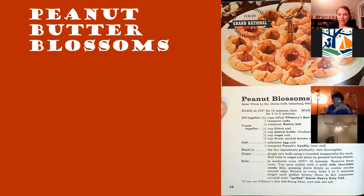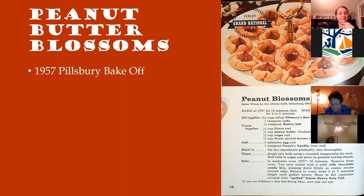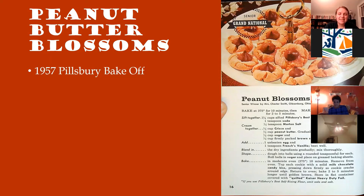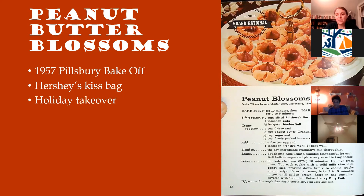The peanut butter blossom — as I said, very distinctly American. It was entered into the 1957 Pillsbury Bake-Off contest. The Bake-Off baking contest had been around since 1949, post-war, end of sugar rationing in 1947. It was to promote Pillsbury flour and other Pillsbury products. Mrs. Chester Smith entered the Black-Eyed Susan cookie, which Pillsbury chose to rename the peanut blossom or peanut butter blossom. She doesn't win the overall prize — she wins in her category, the senior citizen category. However, because it contains Hershey Kisses, Hershey starts printing the recipe on the back of the bag, and it's so easy and so delicious that by the 1960s it's everywhere.